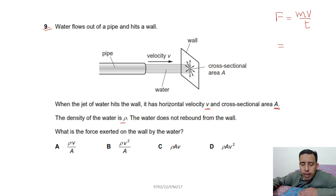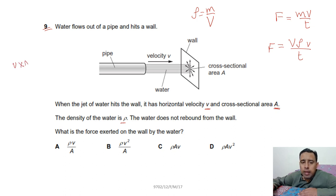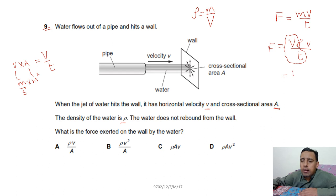Mass equals volume times density. Multiplying speed by area gives volume per unit time (m³/s). So volume/time = v·A, and force = ρ·A·v². Therefore F = ρAv², and option D is correct. This is the key trick for this question.